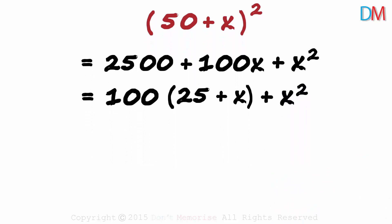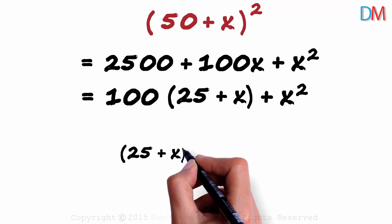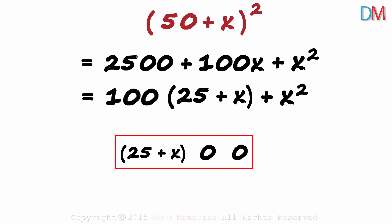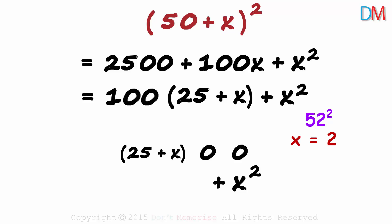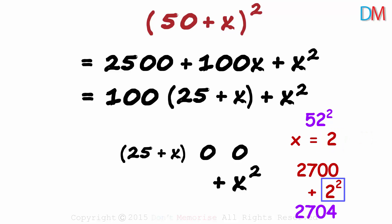How do we interpret this product? The answer will be something like (25 + x) followed by two zeros, and to this we are adding x squared. x is nothing but the difference. If we want to find 52 squared, x will be 2. So we will have 2700 on top and 2 squared under it, giving us 2704 as the answer. This explains the logic of the partition: we add 25 to the difference on the left, square the difference on the right, and we always have two digits on the right because of the two zeros. That's the logic behind this shortcut for squaring numbers close to 50.